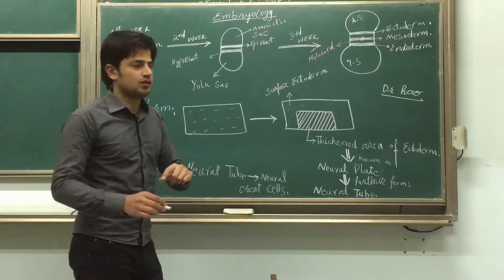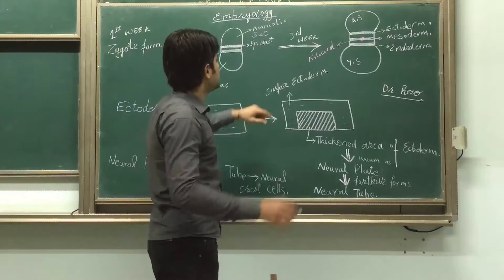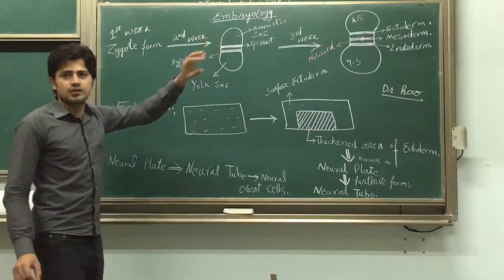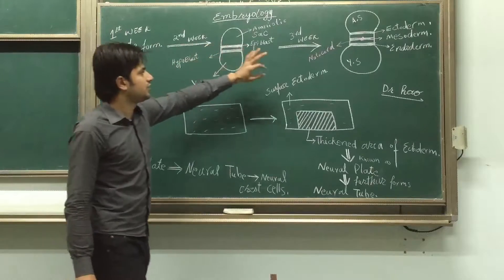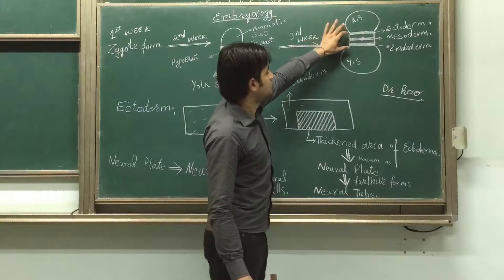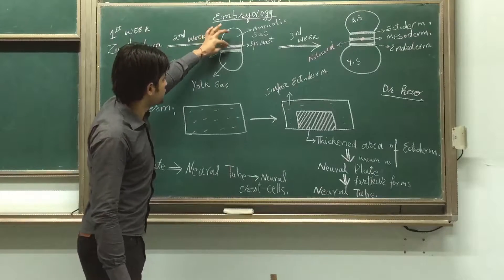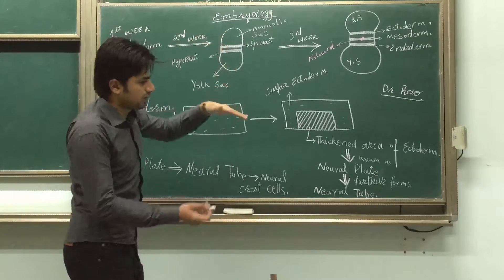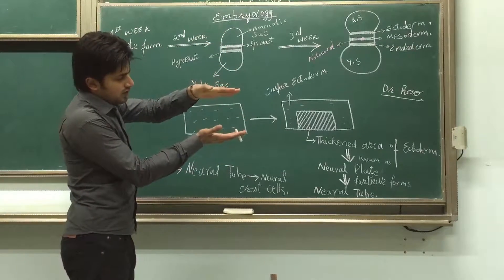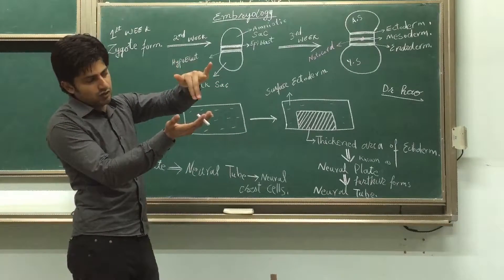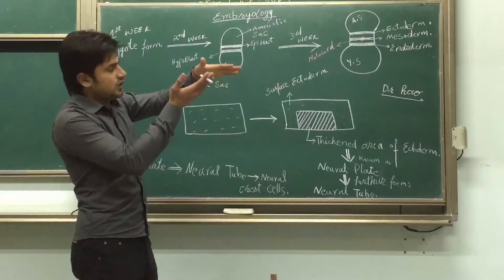In the third week after mating, this bilayer becomes a trilayer. Three layers are formed. Actually, some cells of the epiblast go down. Before it was just two layers, but some cells from the epiblast come down and make a space between the epiblast and hypoblast, forming three layers.